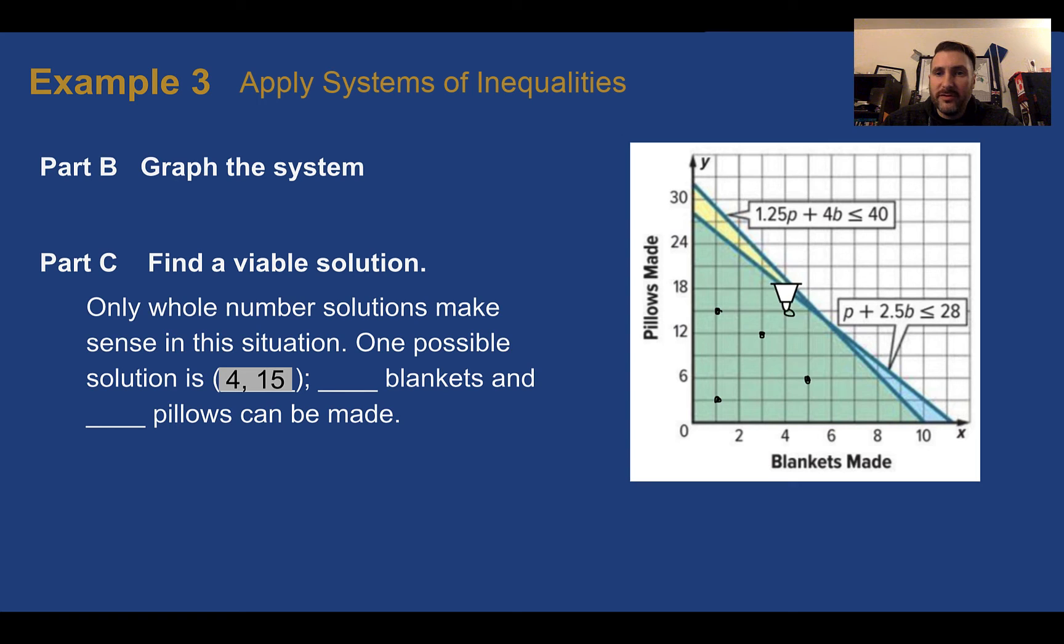So 1, for example, would be 4 and 15, which would be right there. That would mean that 4 blankets and 15 pillows were made. Here we have 5 and 6. So 5 blankets and 6 pillows. Here we had 1 and 15. Again, anything in the green would work. Whereas if it was in the yellow or in the blue, those would not work. If it falls on the boundary, be careful. It has to fall on the boundary of the double shaded. So let's say, for example, that this point right here was a whole number of pillows. That would work because it's on the boundary of the green. Whereas if it was like here on that boundary, it would not work because yes, it's on the boundary of yellow, but it is not on the boundary of blue and it's not in both. It doesn't work.